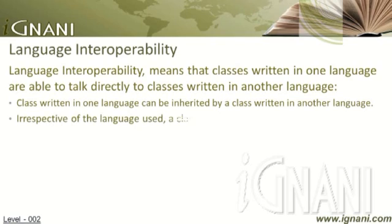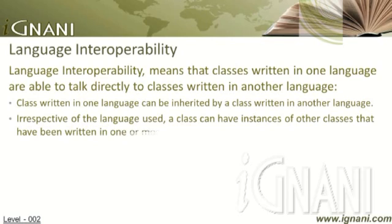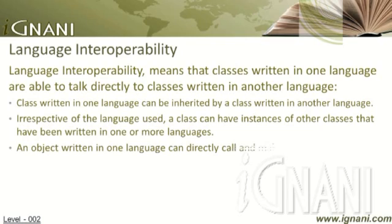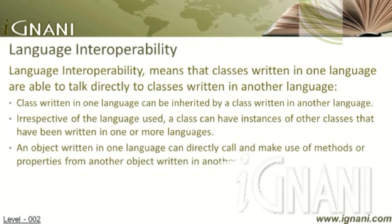Irrespective of the language used, a class can have instances of other classes that have been written in one or more languages. An object written in one language can directly call and make use of methods or properties from another object written in another language.